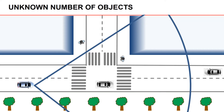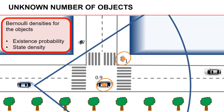So let's return to the illustration scenario. To begin with, we have the objects in the field of view, where each object can be represented by a Bernoulli density with a probability of existence and some state density. The numbers represent the probability of existence, and the circle and ellipse represent the Gaussian mean and covariance. The probability of existence is useful for representing uncertainty about whether an object is actually there, and the state density captures uncertainty about the object's position. If the estimated probability of existence becomes too low, we can remove the Bernoulli entirely.